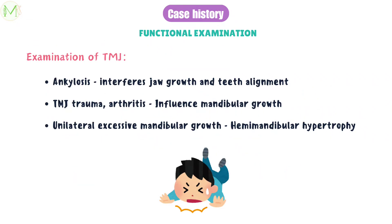Any problem in the TMJ can cause malocclusion. Ankylosis at an earlier stage of life can interfere with jaw growth and alignment of teeth. Trauma, arthritis, or fracture of the condyle influences mandibular growth. Rarely, unilateral excessive growth of the mandible can occur in metabolically normal individuals, causing the mandible to shift to the normal side — a condition called hemimandibular hypertrophy.